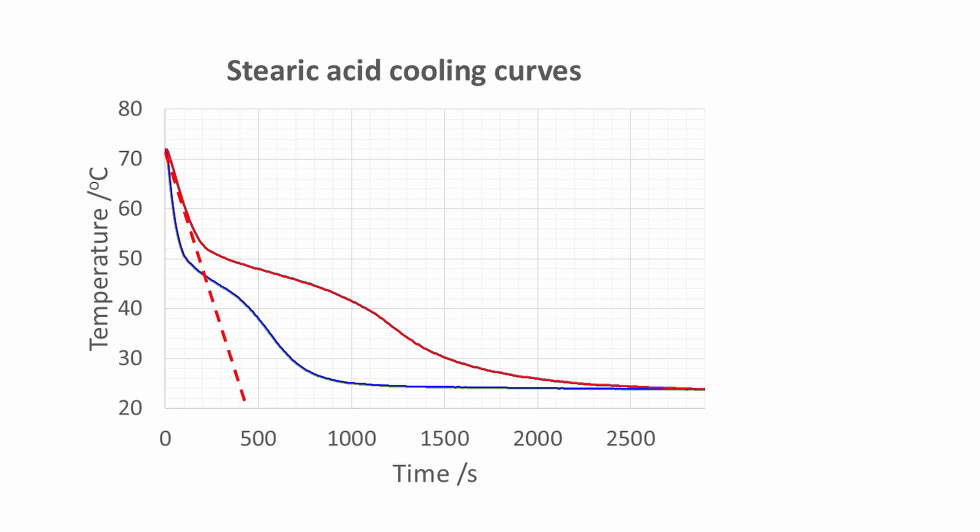The red dotted line is a tangent that could be used to calculate the initial rate of cooling for the sample that cooled in air.